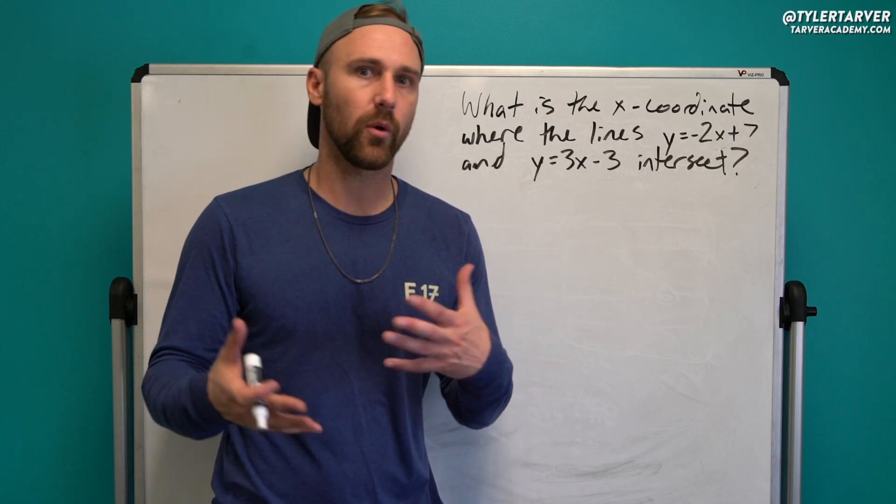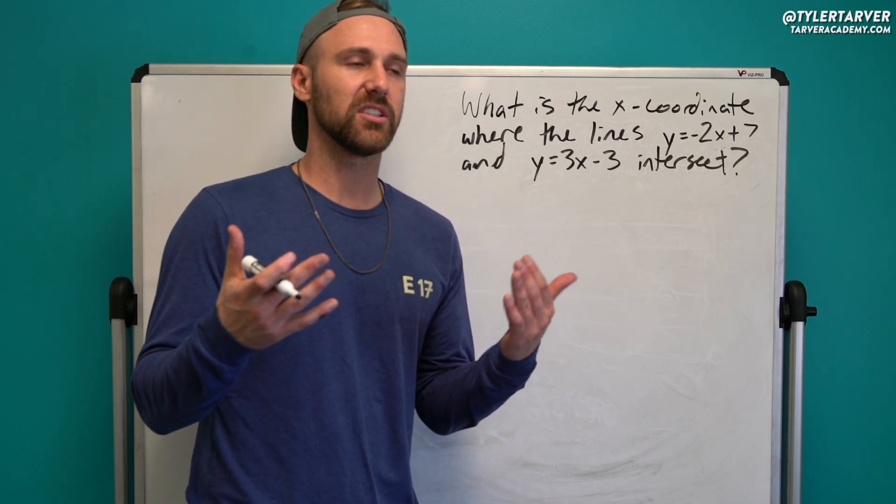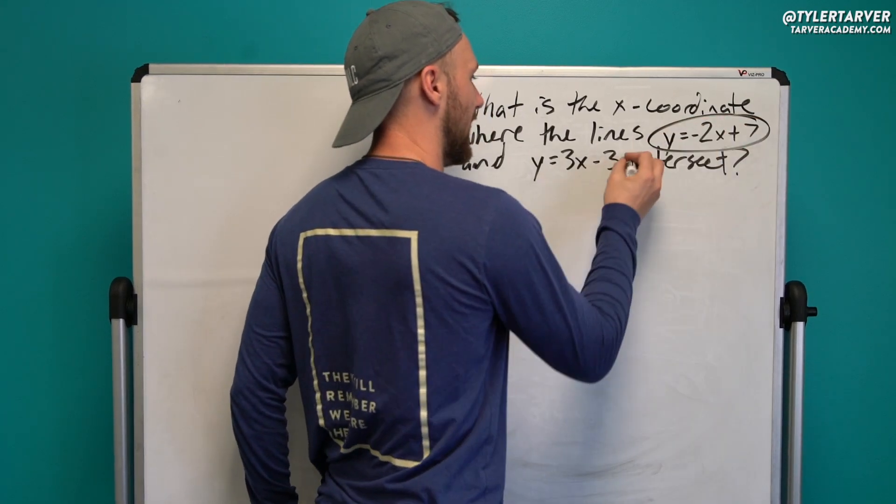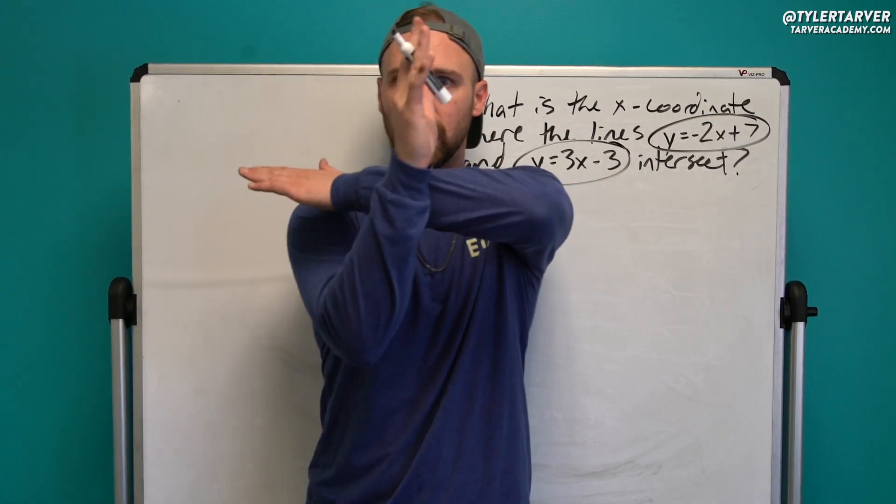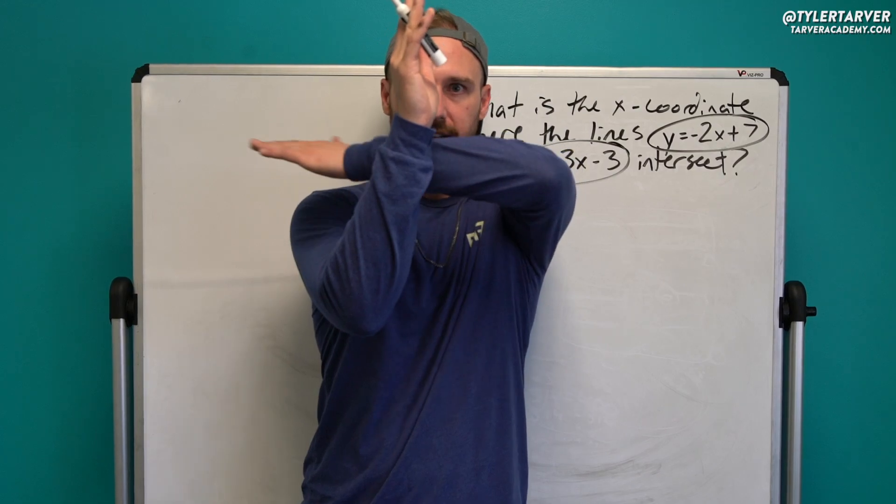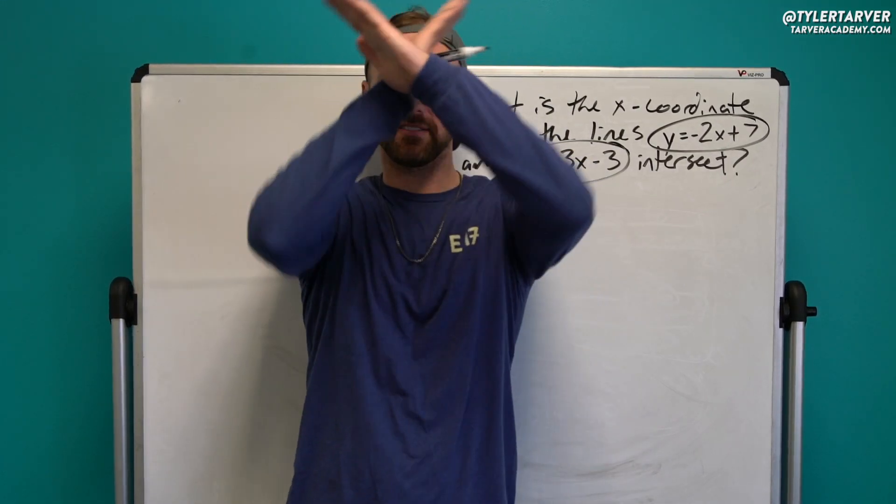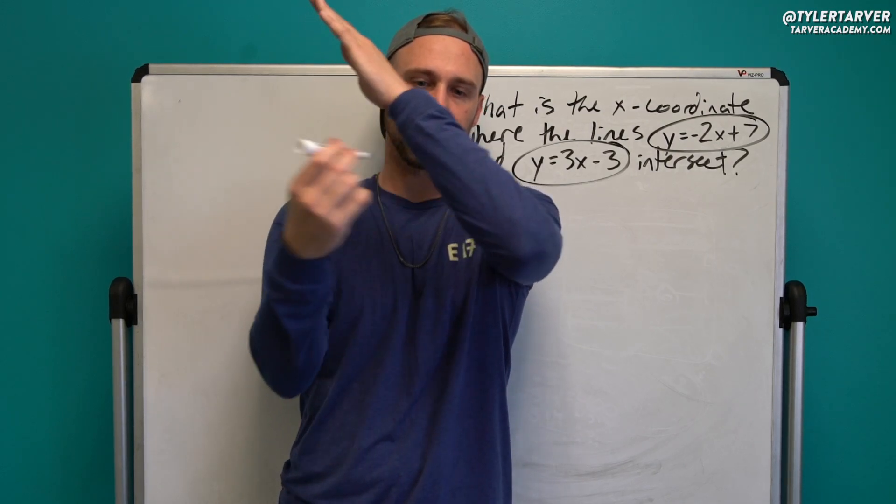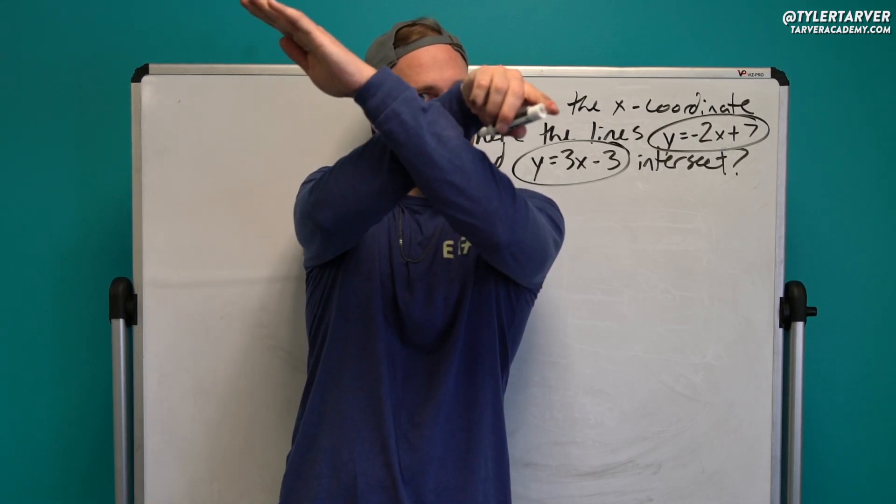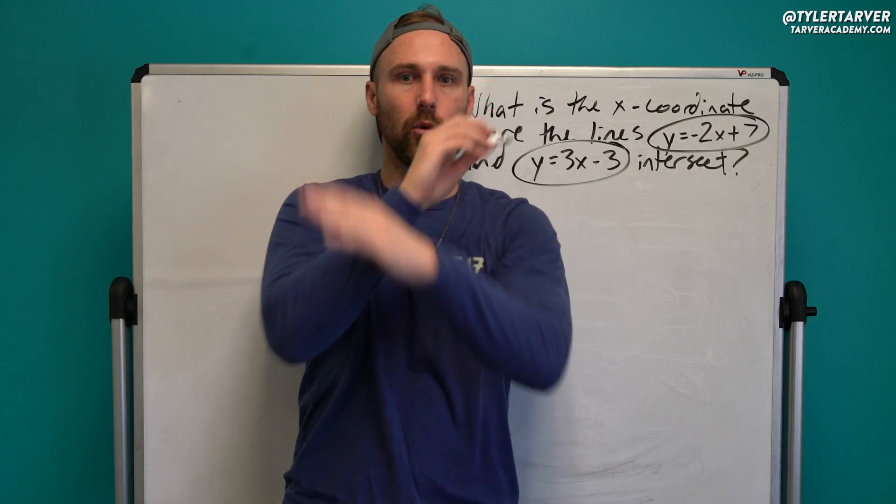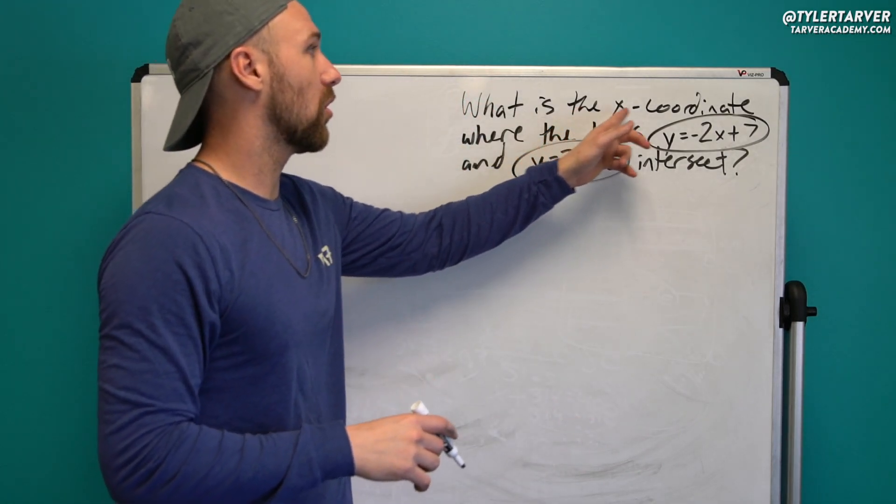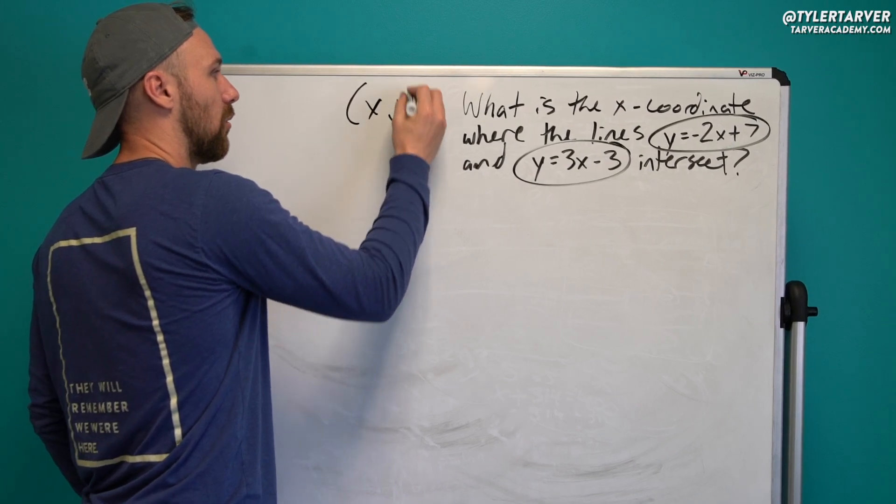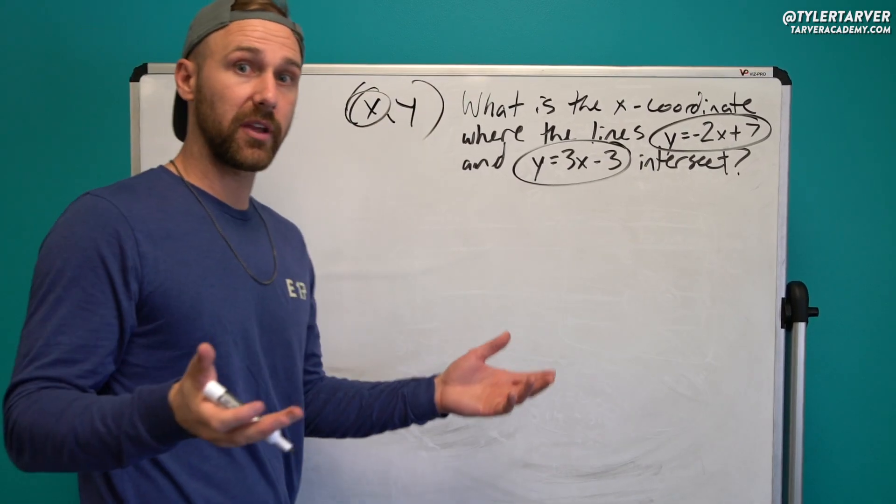What's the x-coordinate where the lines of that and that intersect? This is called systems of linear equations. Essentially what you're doing is these are two lines. These are the formulas for two different lines. This is a coordinate plane. This is your x-axis and your y-axis. These lines are going to be somewhere on here. We want to know where is that spot where they cross? What's that coordinate? We don't even want the whole coordinate. We just want the x-coordinate. So out of this x, y, we just care about the x. That's all we care about right now.